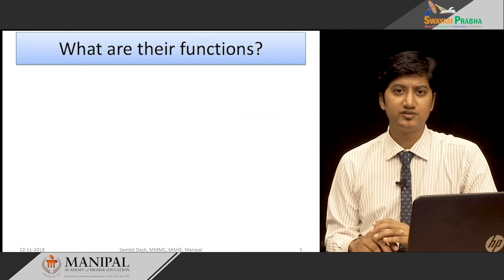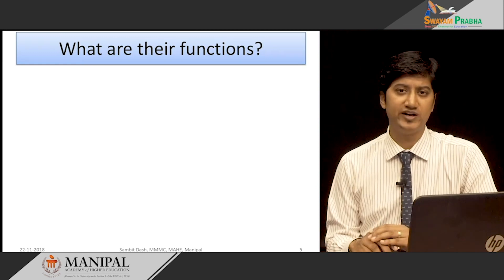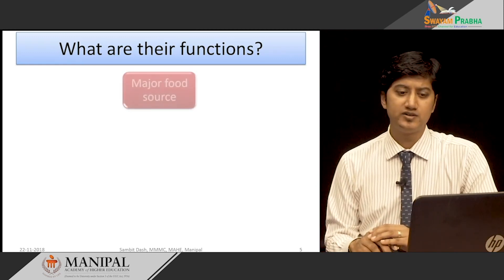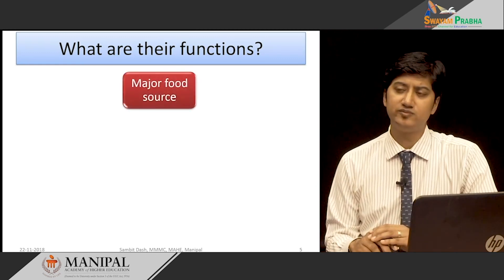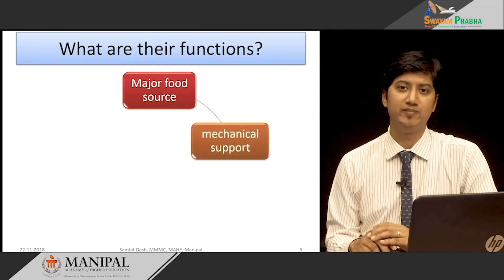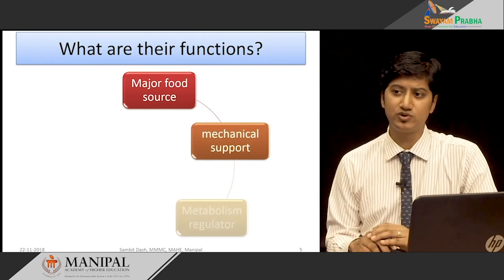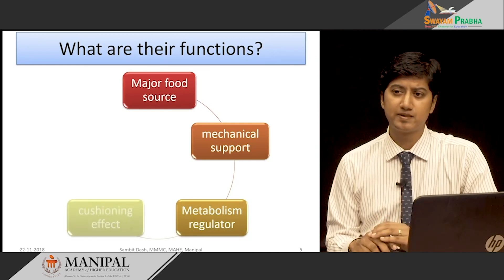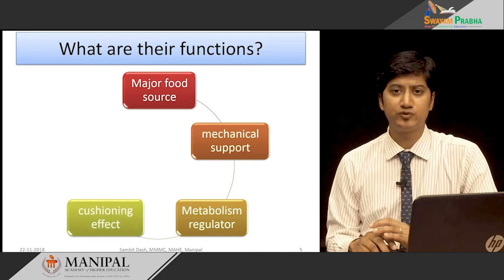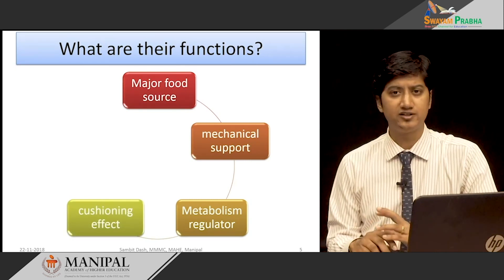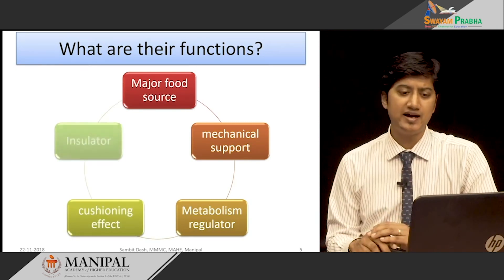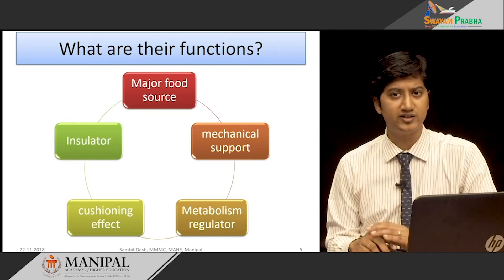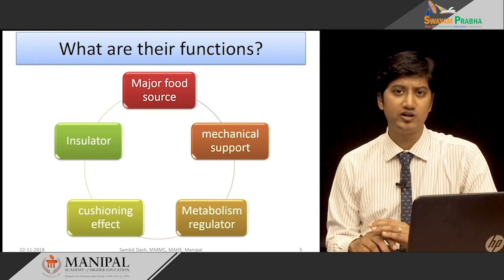The adipose tissue has a loose network of elastin and collagen fibers. The functions of adipose tissue include: they serve mainly as a major fuel source for the body, they provide mechanical support, they have an endocrine function where they regulate metabolism, they provide a cushioning effect to internal organs, and they also function as an insulator for the body.